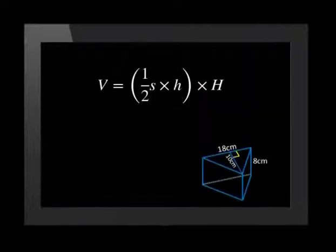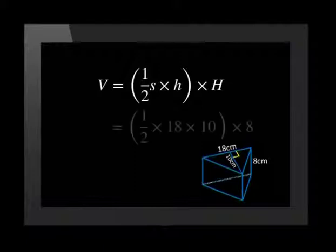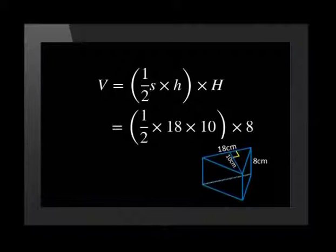So, the volume is equal to half of one side of the triangle times the perpendicular height multiplied by the height of the prism. We substitute in the values we are given on the diagram. The volume equals half of 18 multiplied by 10 multiplied by 8, which is equal to 720 cm cubed.